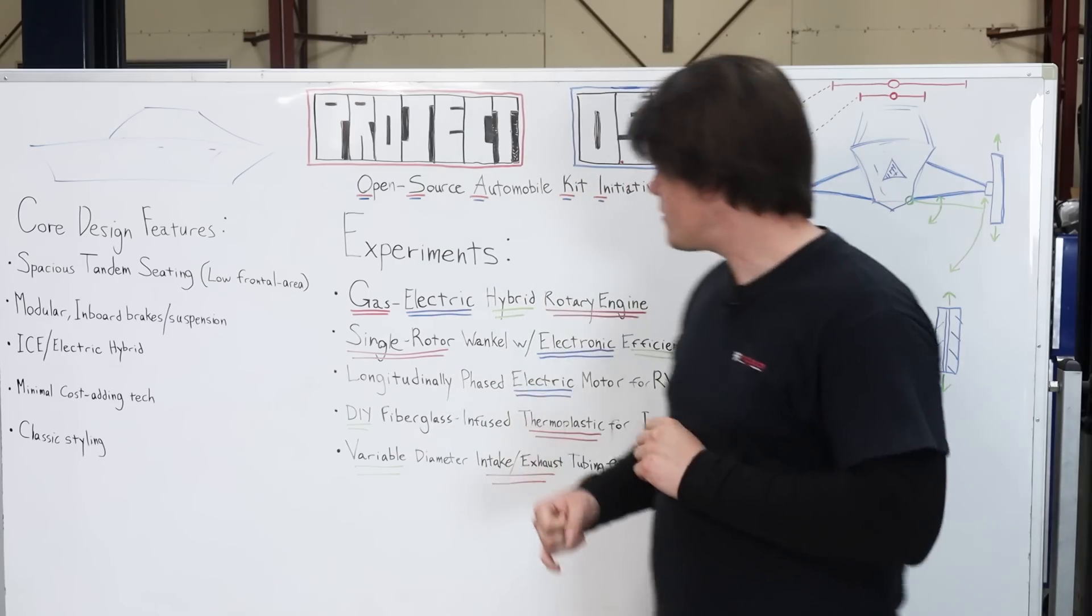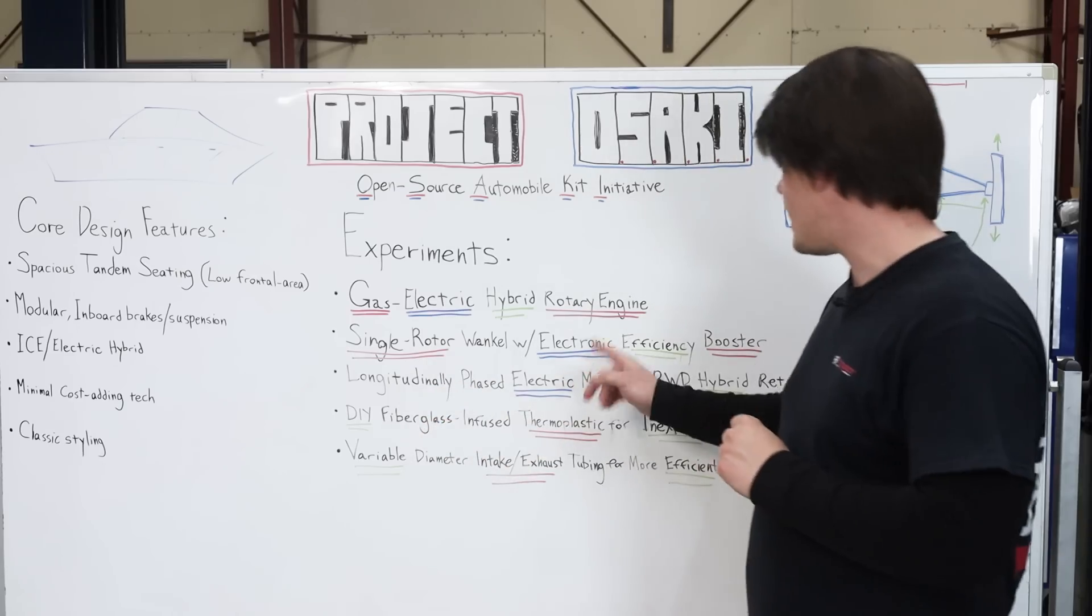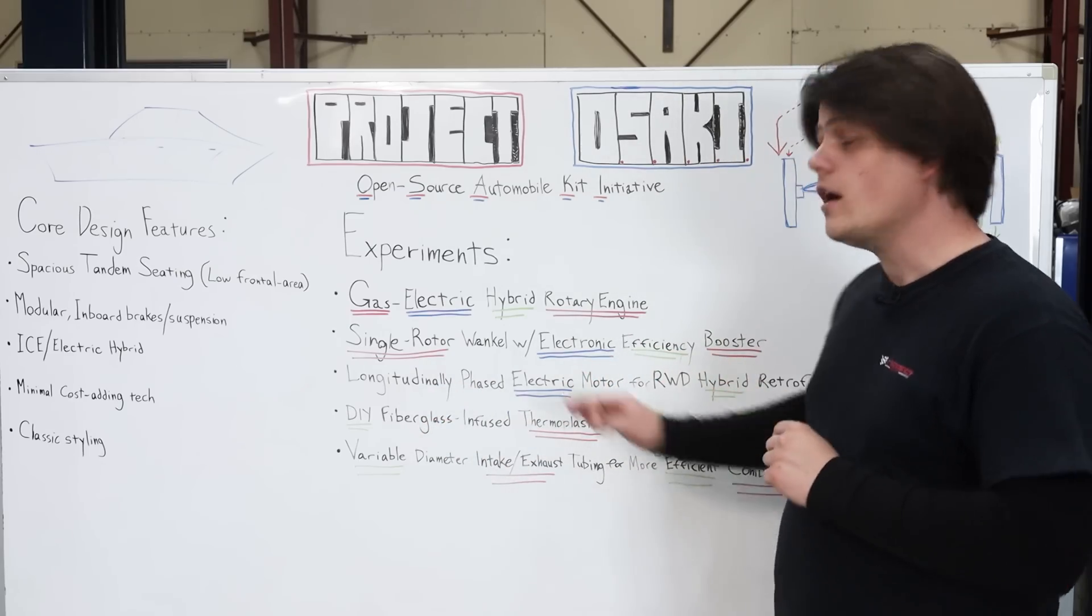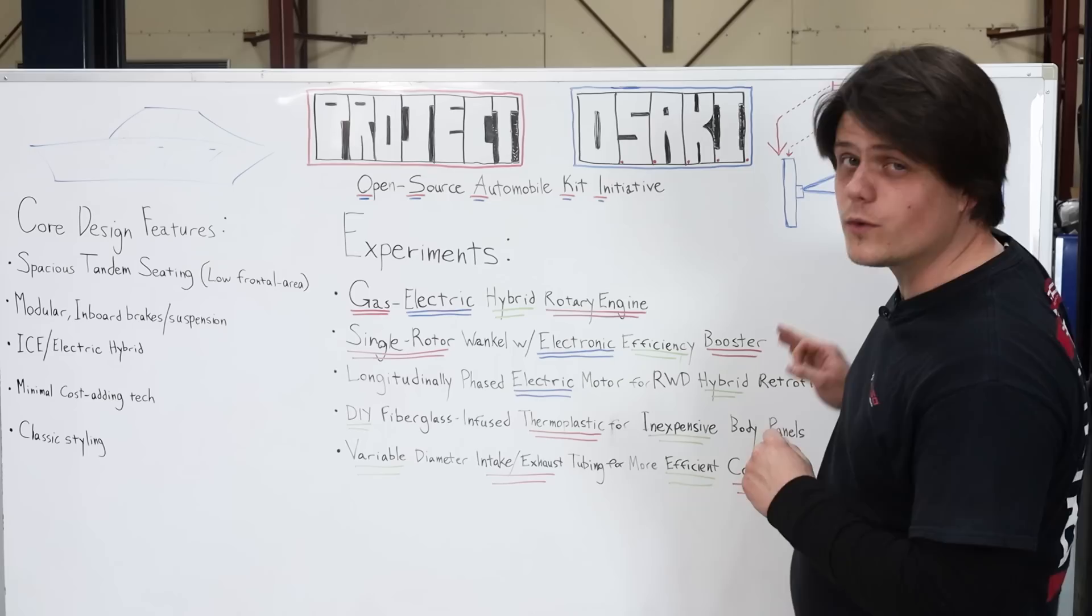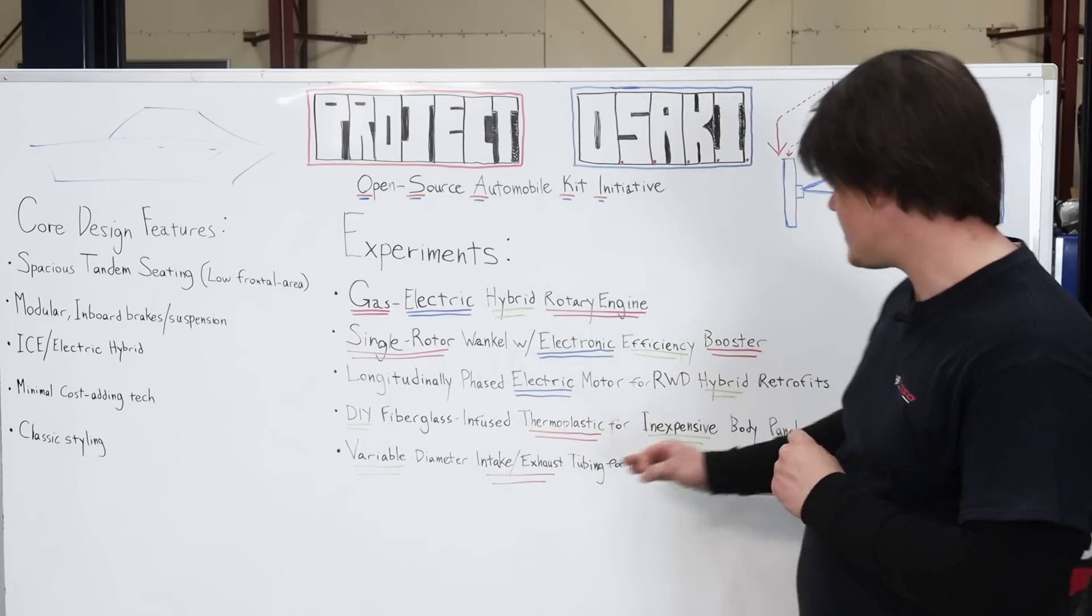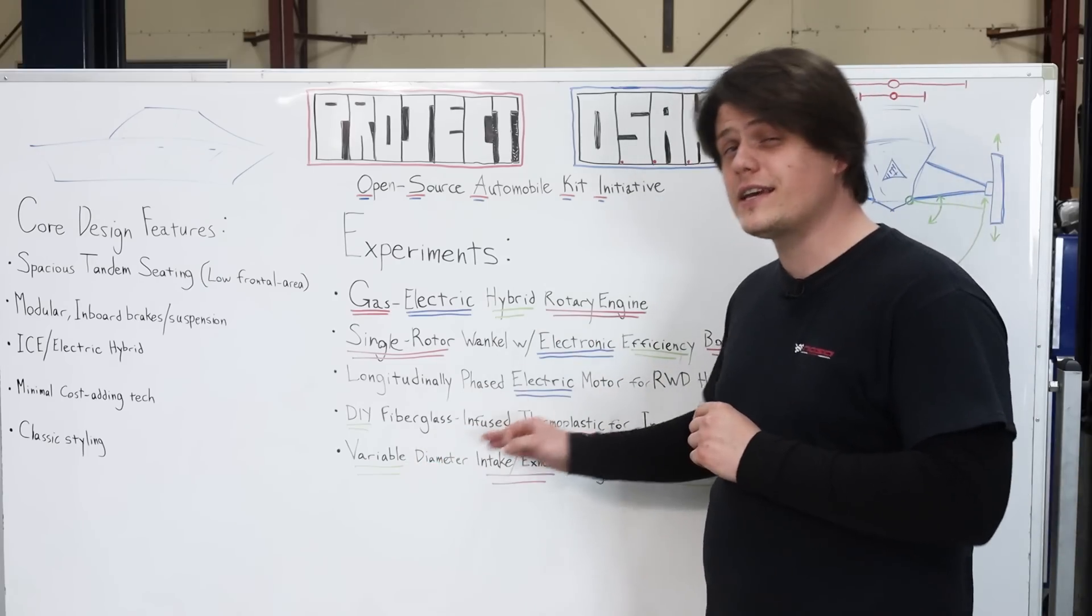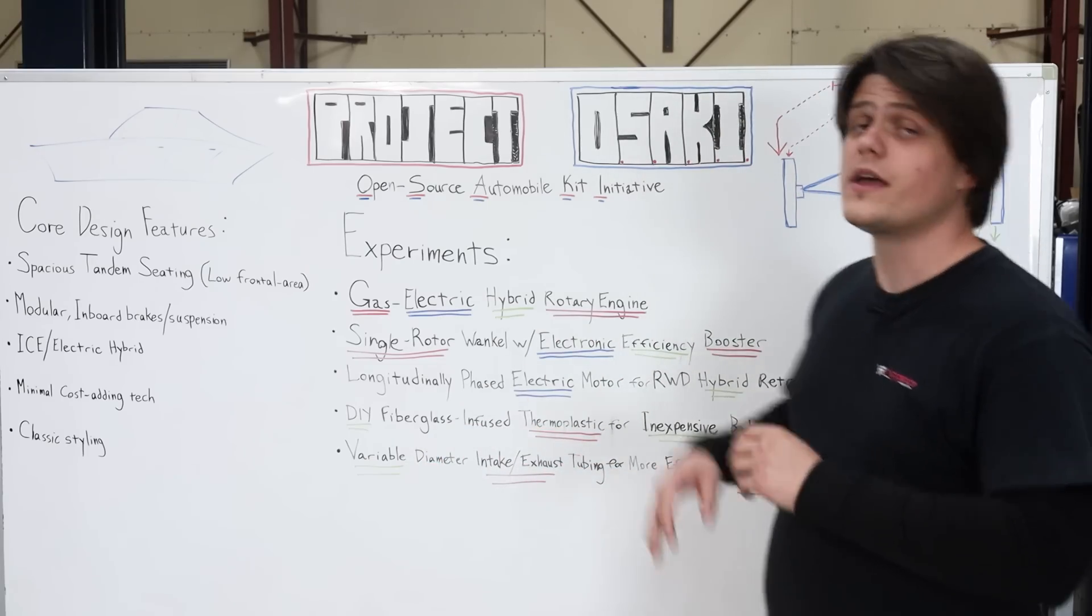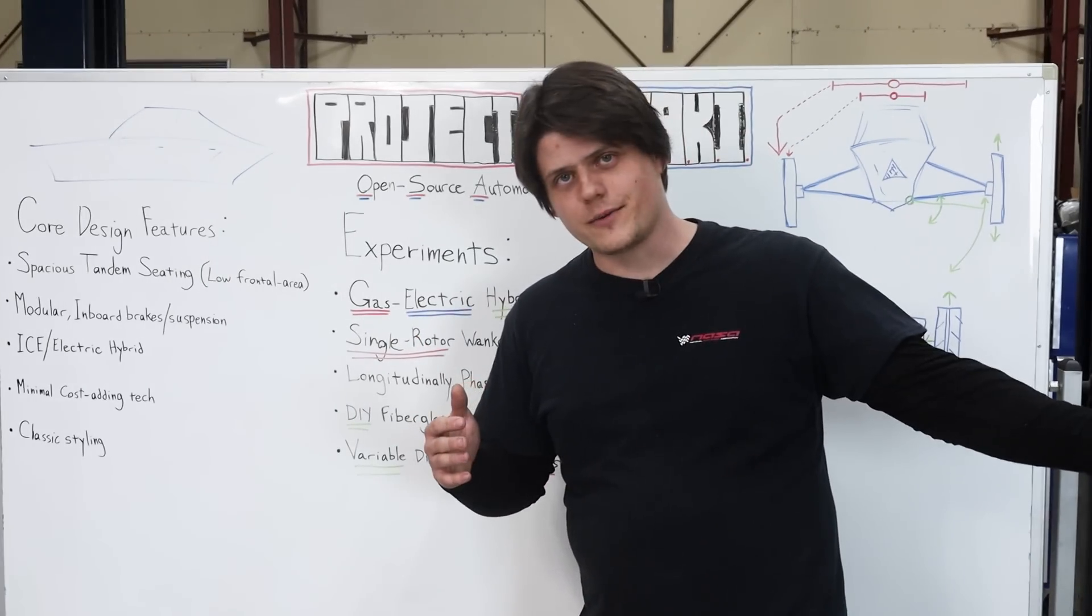Among these ideas are a gas electric hybrid rotary engine, a single rotor Wankel with electronic efficiency booster, a longitudinally phased electric motor for rear-wheel drive hybrid retrofits, a DIY fiberglass infused thermoplastic for inexpensive body panels, and a variable diameter intake or exhaust tubing for more efficient combustion, and then of course the 3D printed intake manifold for the Miata race car.